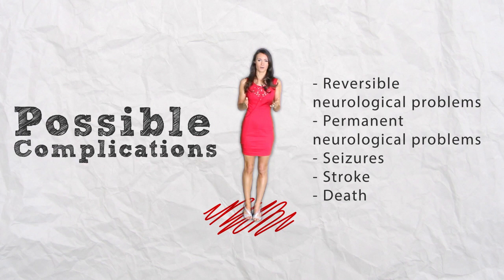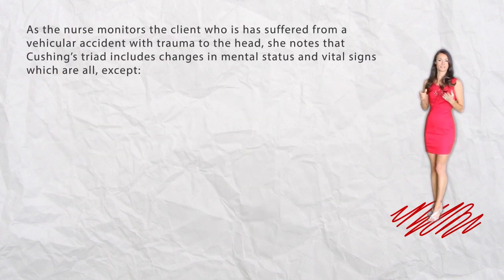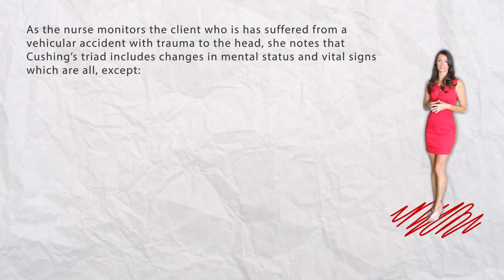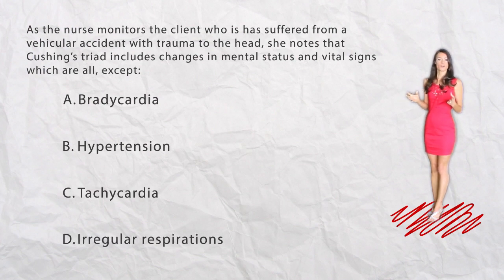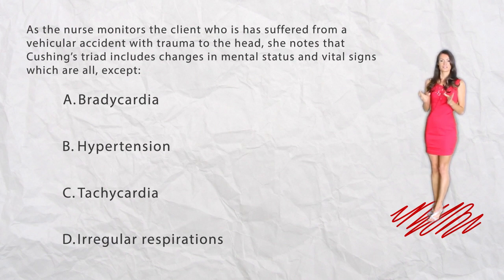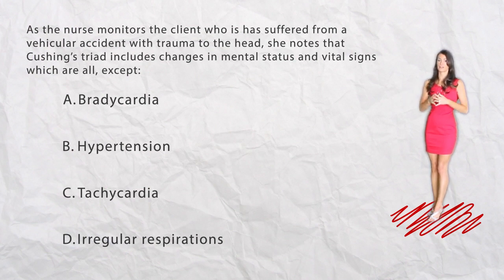Now let's go over some NCLEX-style questions. After the questions, make sure you look below because we have more questions available for you. Question 1: As the nurse monitors a client who has suffered a vehicle accident with trauma to the head, she notes that Cushing's Triad includes changes in mental status and vital signs — which are all EXCEPT: A. Bradycardia, B. Hypertension, C. Tachycardia, or D. Irregular respirations. When herniation of the brainstem and occlusion of cerebral blood flow takes place, Cushing's Triad can occur. The signs and symptoms include bradycardia, hypertension, and irregular respirations. Therefore, the only option not in Cushing's Triad is tachycardia, making C the answer.